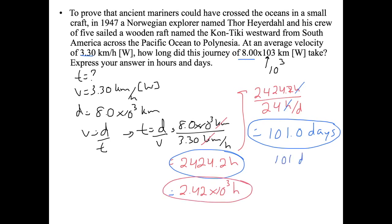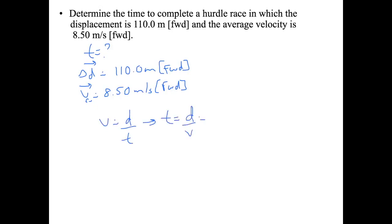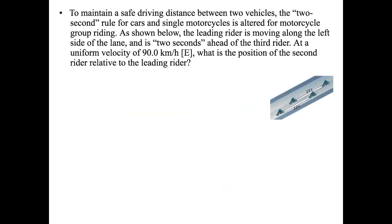Determine the time to complete a hurdle race where the displacement is 110.0 meters forward and the average velocity is 8.50 meters per second forward. We're looking for time. Using t equals d over v: 110.0 meters divided by 8.50 meters per second. Meters cancel and we get 12.94 seconds. With three significant figures, the answer is 12.9 seconds.